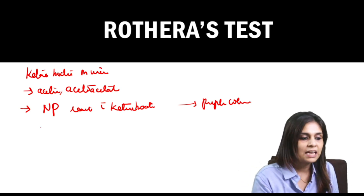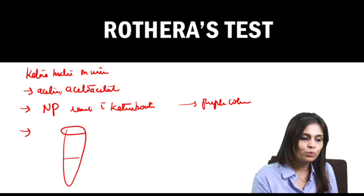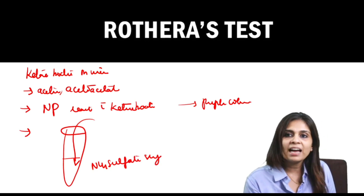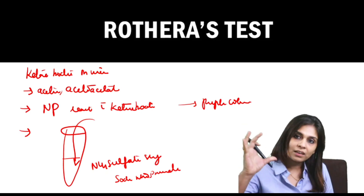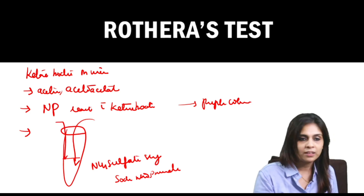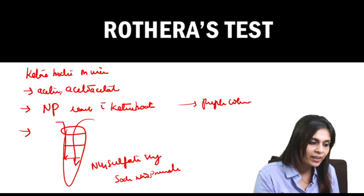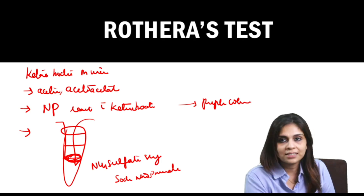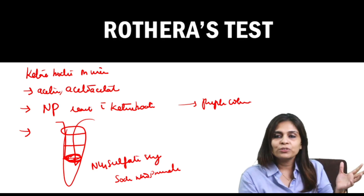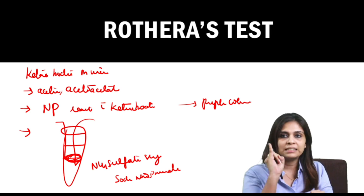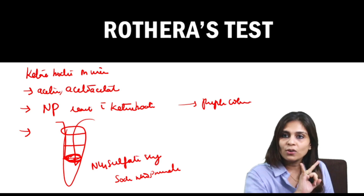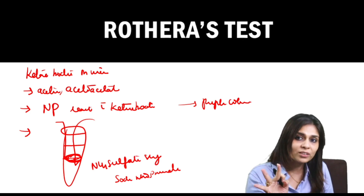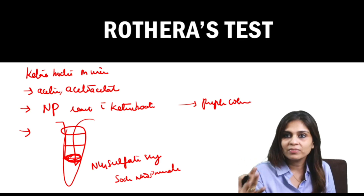How is the test performed? Take 5 mL of urine and supersaturate it with ammonium sulfate crystals. After supersaturation, add a few crystals of sodium nitroprusside, mix thoroughly, and then add liquid ammonia along the sides. At the junction of liquid ammonia and urine, if you find a purple-colored ring, it's positive for Rothera's test. The three key exam questions about Rothera's test: it detects ketone bodies in urine; acetone and acetoacetate answer the test, not beta-hydroxybutyrate; and a positive result means a purple-colored ring.